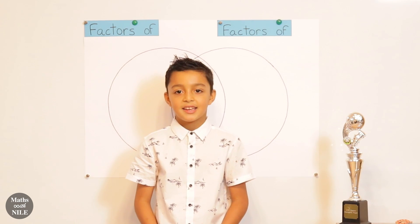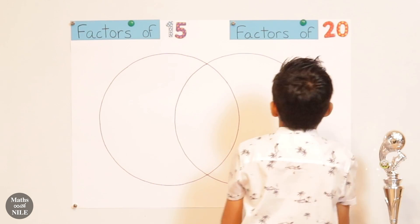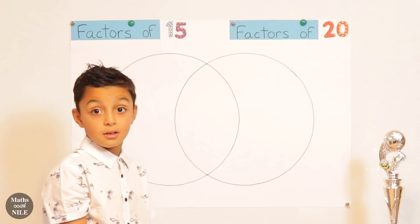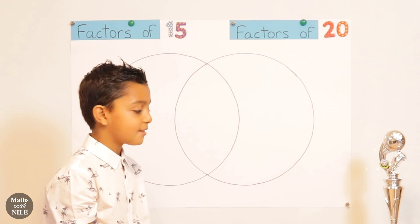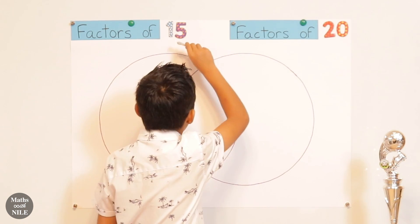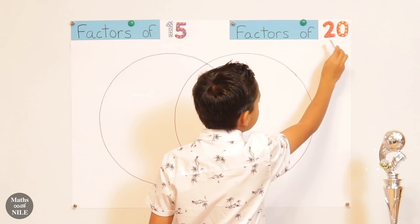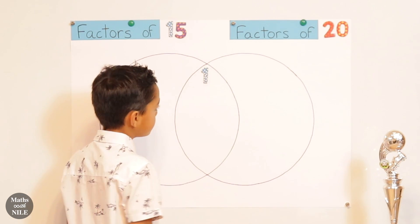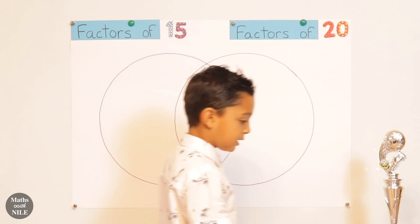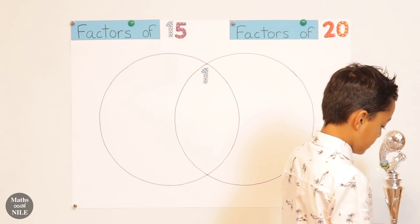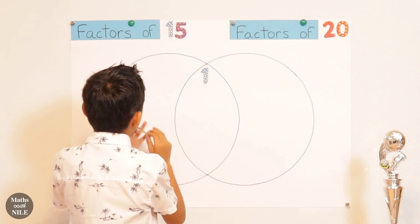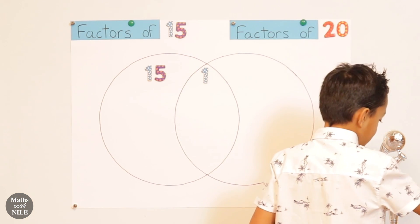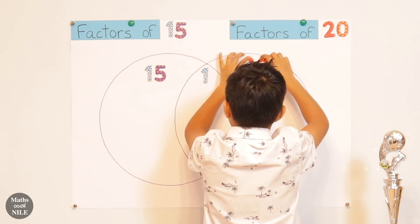So let's try 15 and 20. Again, I would prefer if you think of the smallest number, but you're now thinking of 15 and 20 at the same time. Where do we start? With 1. And 1 can go into 15 fifteen times, and 1 can go into 20 twenty times. So where are you putting the 1? In the middle. And let's put the 15 and the 20 in as well — 15 can go into 15, and 20 can go into the 20.